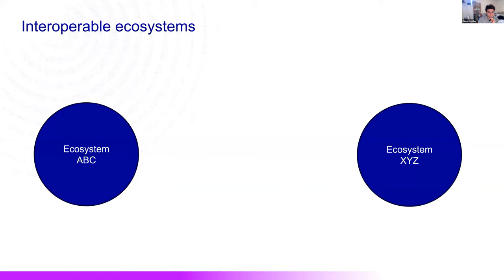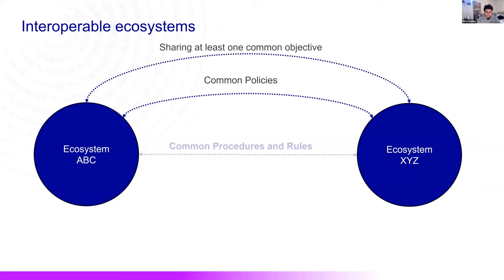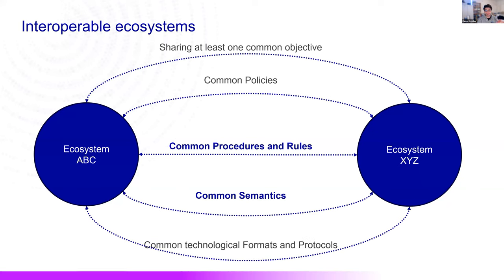The first thing is to have at least one common objective — that's your motivation. This motivation and objectives are then translated into policies: the principles, the ideas of how things are done, the plan of action for decision-making. Once you have that, you can describe the common procedures and rules — the order, the methods for doing something, the permissions, the prohibition, the duty access rights, policy controls, and so on. Then you have the semantics of how you express those policies and rules. And at the very last, you have the technical format and protocol. I found a lot of similarities with the previous presentation: we start with the why, because if you don't have the motivation and the objectives, then technical interoperability is less relevant.